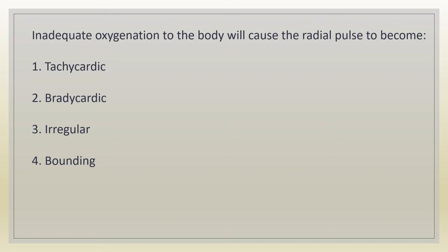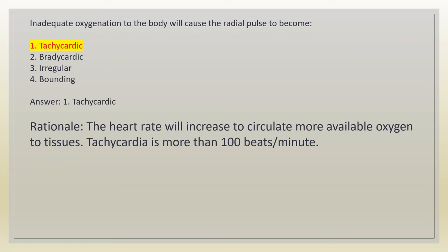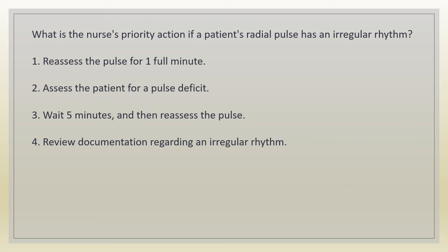Inadequate oxygenation to the body will cause the radial pulse to become: 1. Tachycardic. 2. Bradycardic. 3. Irregular. 4. Bounding. Answer: 1. Tachycardic. Rationale: the heart rate will increase to circulate more available oxygen to tissues. Tachycardia is more than 100 beats per minute.